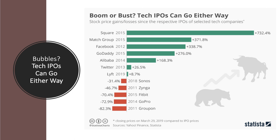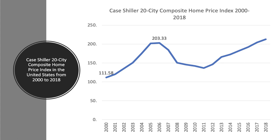Tech IPOs — when tech companies float on the stock market — don't necessarily go in a positive way. The likes of Facebook, Alibaba, and Twitter did well when they floated, with some big first-day gains, but that's not guaranteed. Look at businesses like Fitbit, GoPro, and Groupon, which lost a lot of value and couldn't live up to their hype at flotation. Those companies, including GoPro and Fitbit, are currently trading well below the price at which shares were initially traded, leaving investors with a big loss.